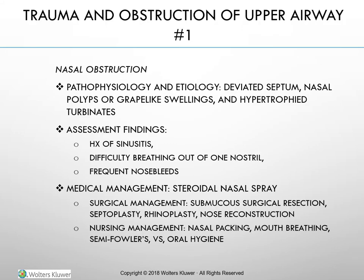Trauma and obstruction of the upper airway — Nasal Obstruction: The pathophysiology and etiology includes a deviated septum, nasal polyps (grape-like swellings), and hypertrophic turbinates. Assessment findings include a history of sinusitis, difficulty breathing out of one nostril, and frequent nosebleeds. Medical management is steroidal nasal spray. Surgical management includes submucous surgical resection, septoplasty, rhinoplasty, and nose reconstruction. Nursing management includes nasal packing, mouth breathing care, semi-Fowler's position, vital signs, and frequent oral hygiene.